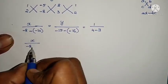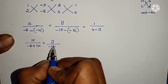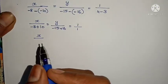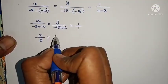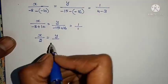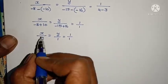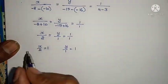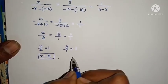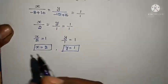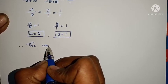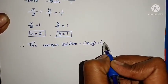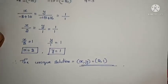Now see: x by minus 8 minus into minus plus 10 equals 2. y by minus 15 plus 16 equals 1. 1 by 4 minus 3 equals 1. So x/2 = 1, y/1 = 1, giving x equals 2 and y equals 1. Therefore the unique solution x comma y equals 2 comma 1. That's all, the problem is over.